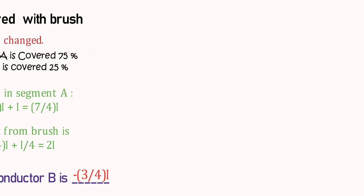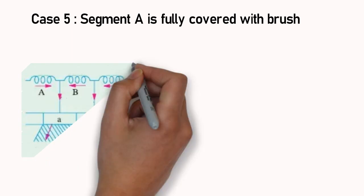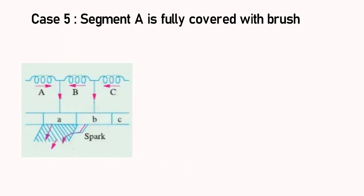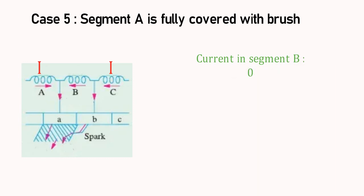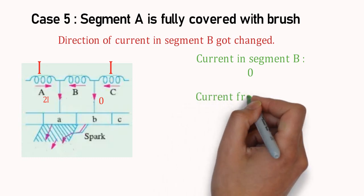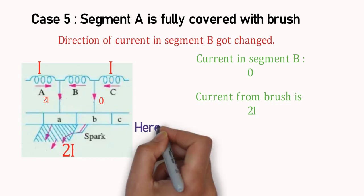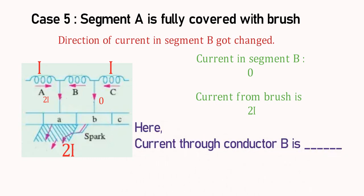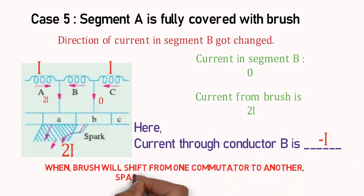Last case is when commutator segment A is fully covered with brush. Here, from coil A and coil C same amount of current I is flowing. As terminal of coil B is not connected with commutator segment, no current is passing through segment B, and receiving current from brush is 2I. Hence, current from coil B is I but direction of I is reversed. When commutator segment change their contact with brush, sparking produce. This whole process is called as commutation process.